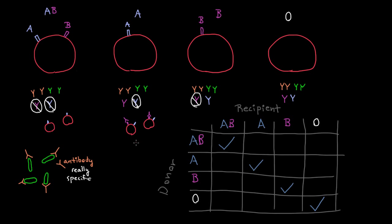Can a person with AB blood give to someone with type A blood? The answer is no, because the person with type A blood has antibodies to B which will react with it. So an AB donor cannot give to an A recipient. On the other hand, we said that giving type A blood to a person with AB blood is fine, because the person with AB blood has no antibodies to A or B. So an A donor is compatible with an AB recipient.